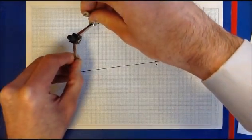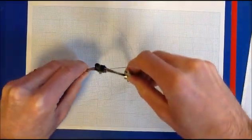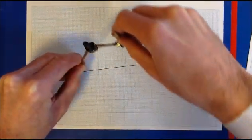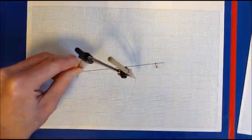And then you're going to draw an arc which goes above the line and also below the line, like so. Something like that.